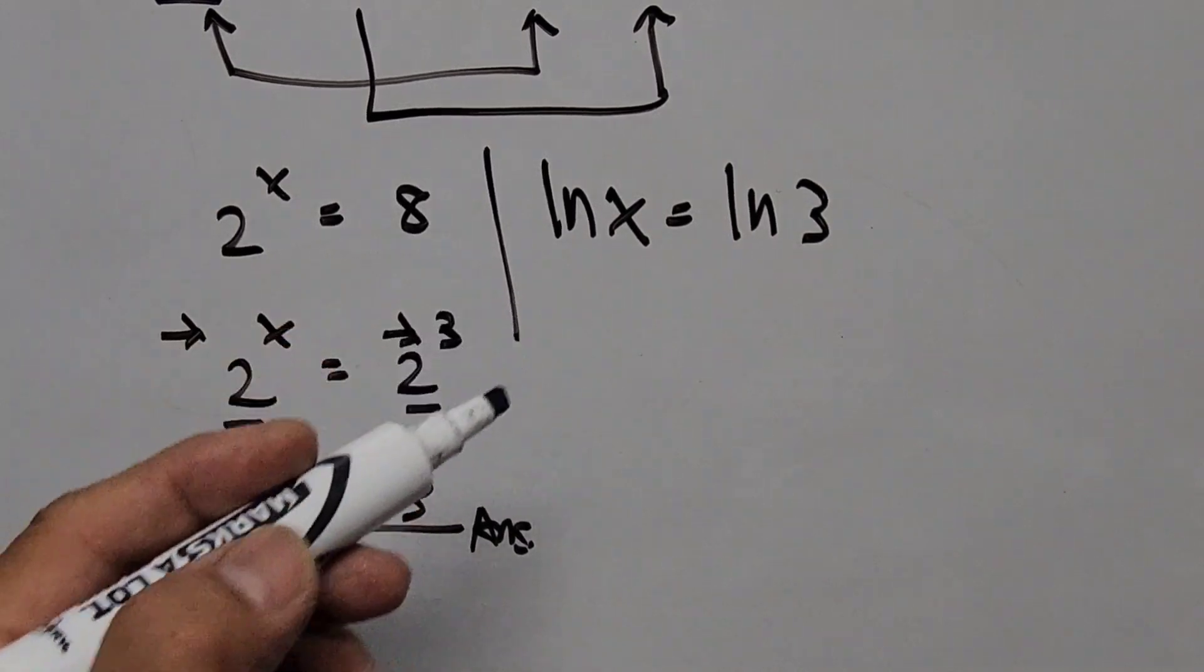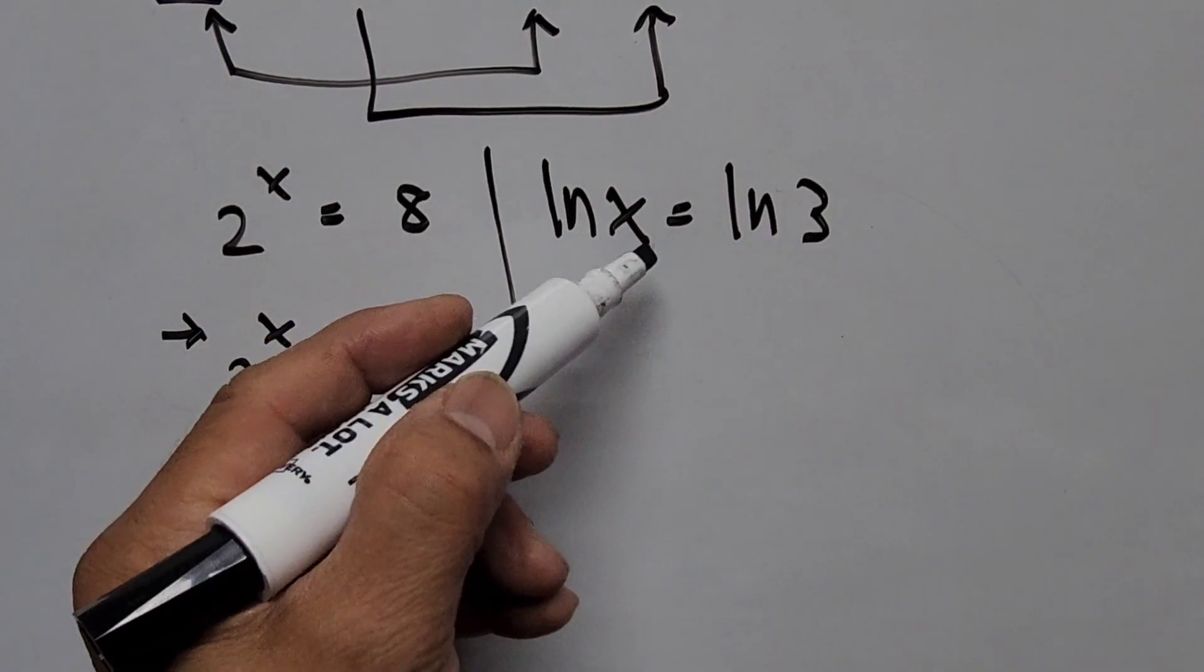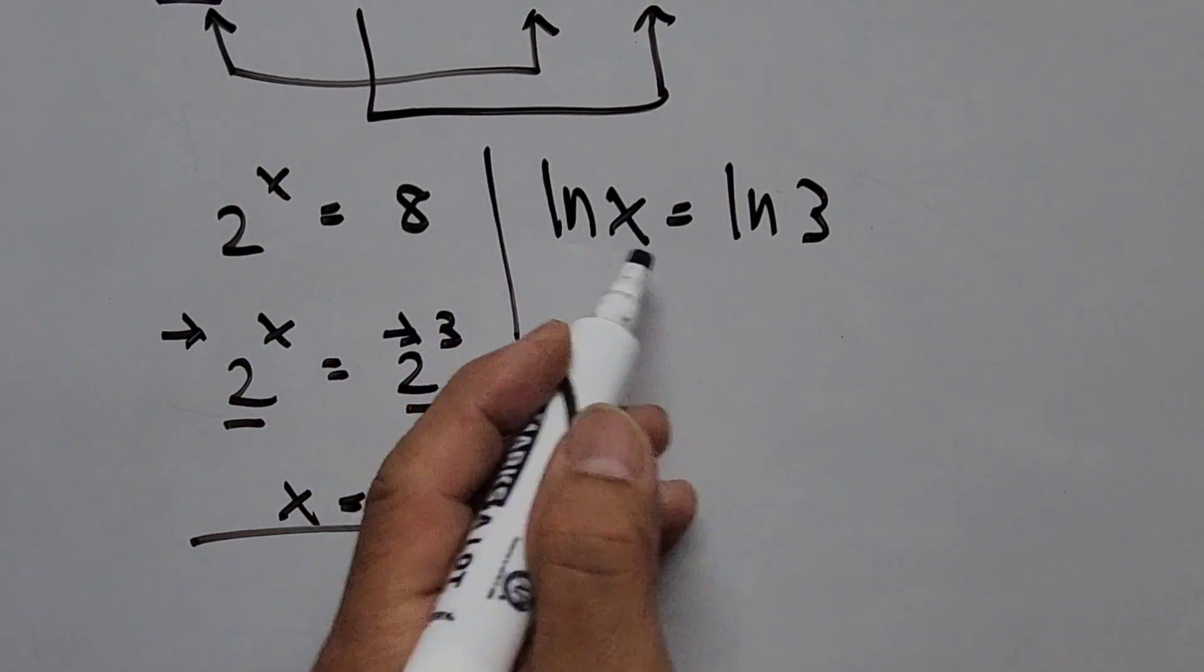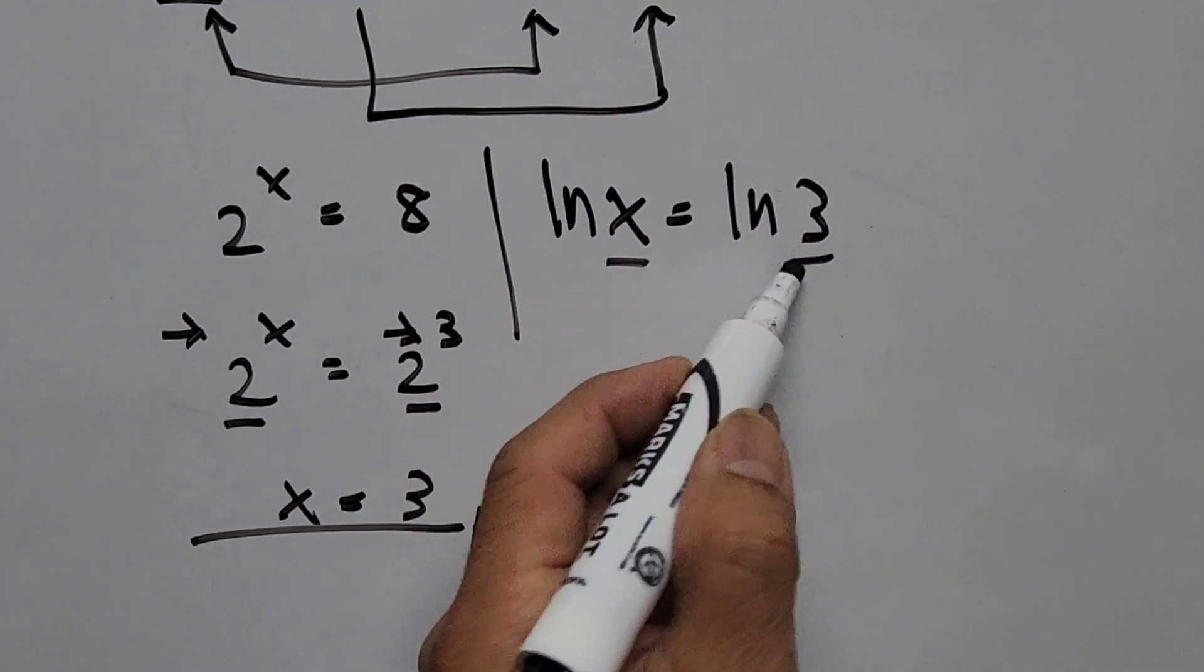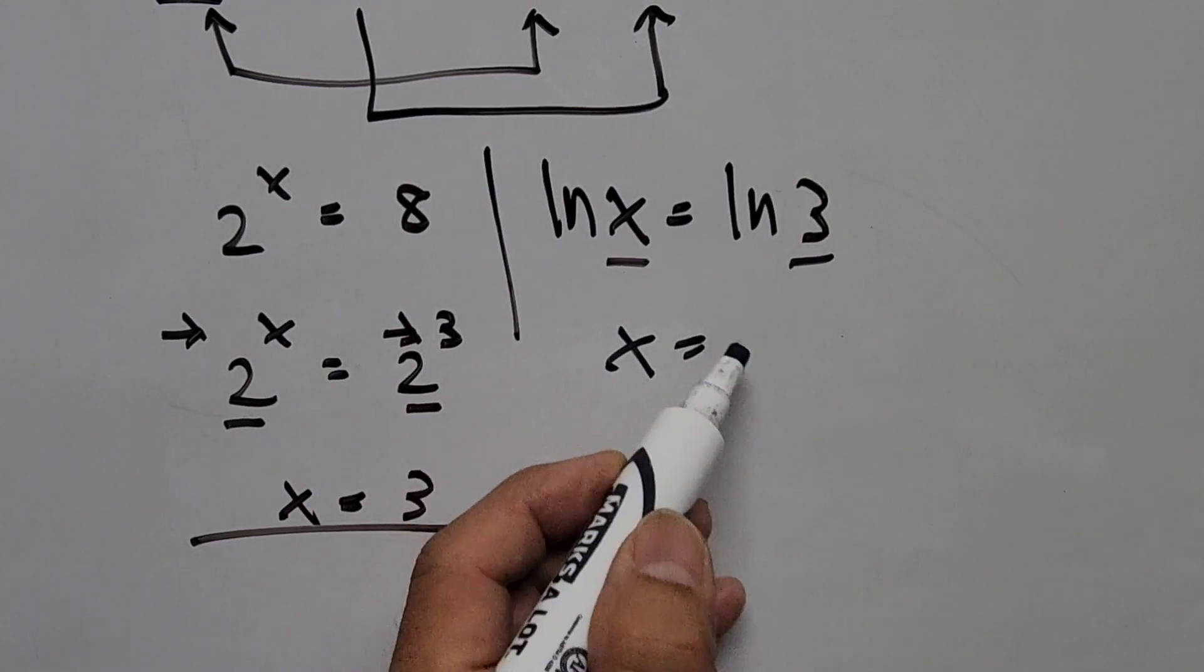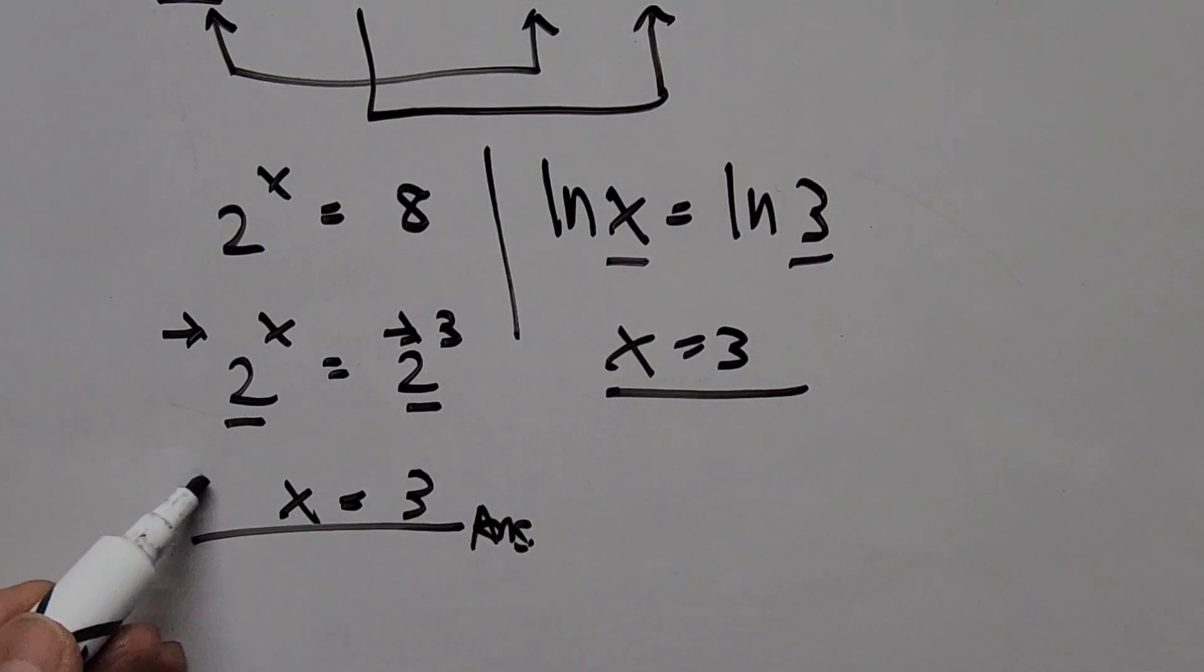And considering the right hand side, ln of x is equal to ln of 3, it's very obvious that x is equal to 3. So x is equal to 3, that's the same as that, the same answer.